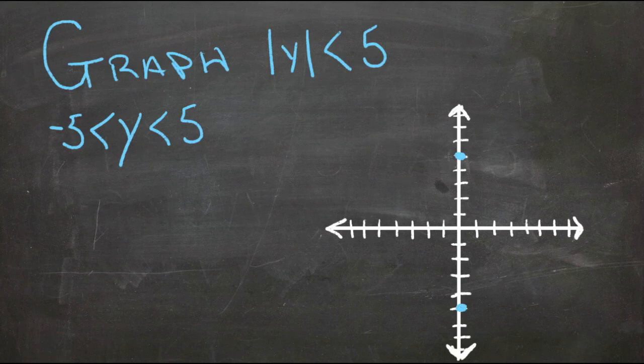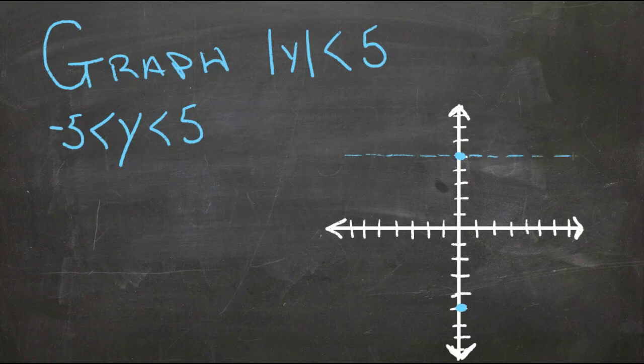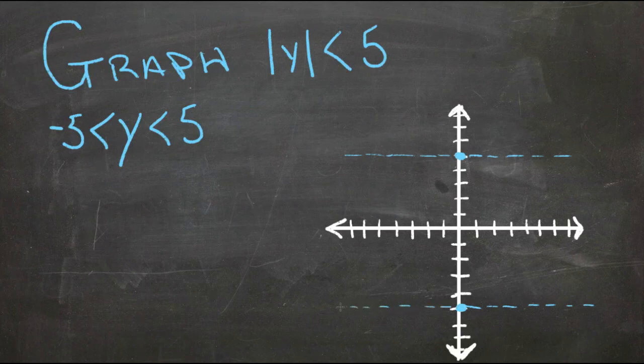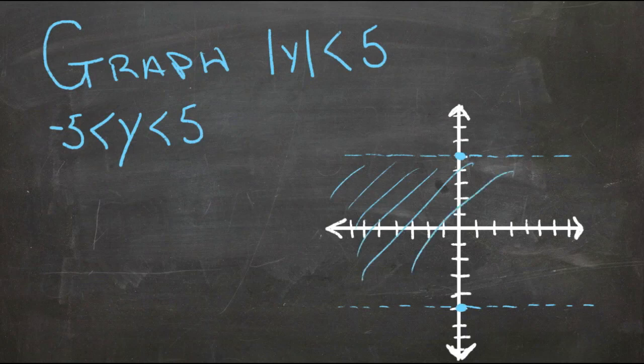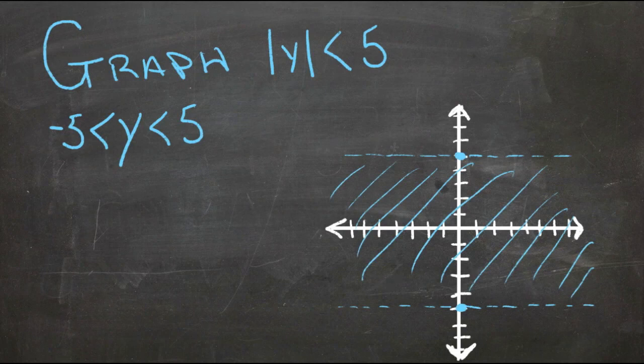So what we do is draw a dashed line at both of those places, like this, to show that those are our markers. We do the dashed line to show that those actual points aren't included, and then we just shade everything between them to show that all the numbers between negative five and positive five are included in this graph.